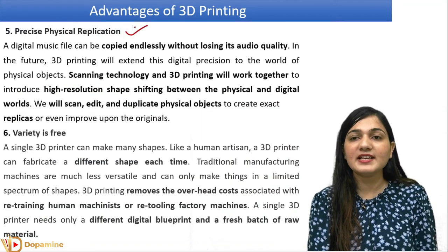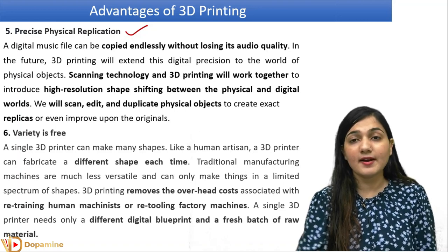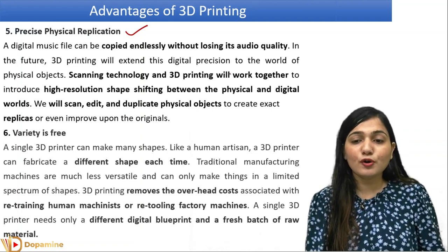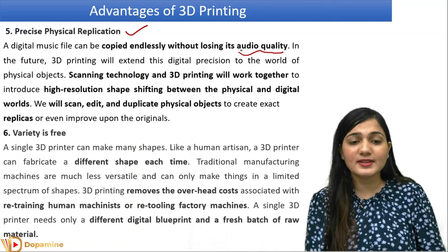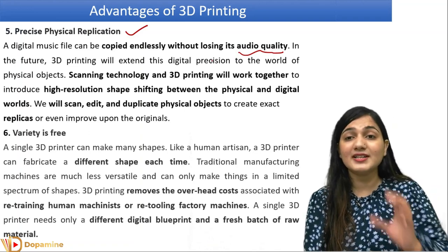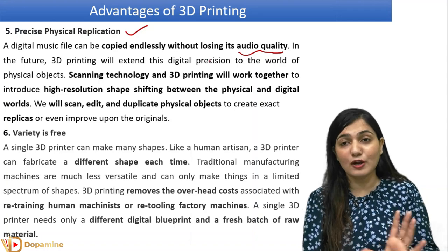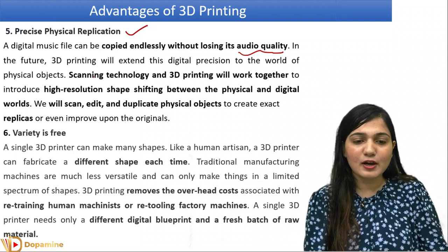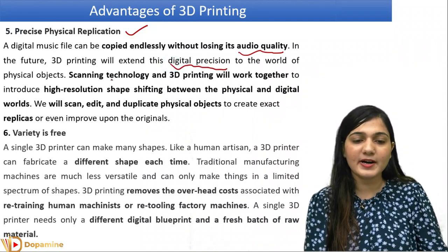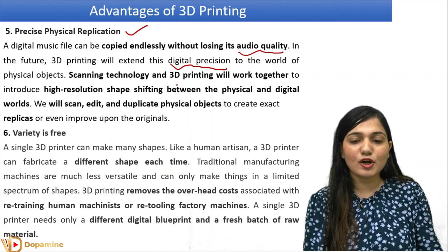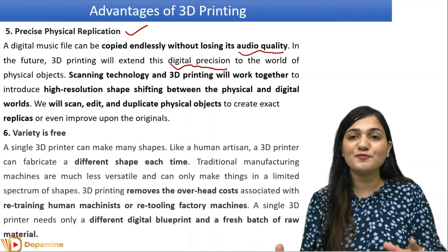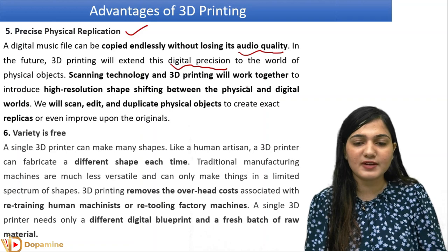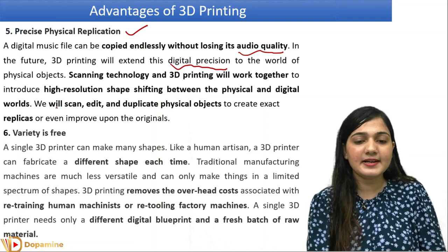Precise physical replication is another advantage. Just like when you copy a music file to another computer there is no audio quality lost, in the same manner in the future we will have digital precision transferred to physical objects. I have made a file in the computer, and the same file I have replicated into a physical object — so the digital precision will increase in the physical object. The scanning technology and 3D printing will work together; we will scan any object and make the same replica with high resolution.